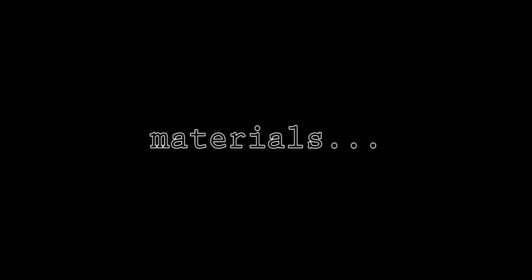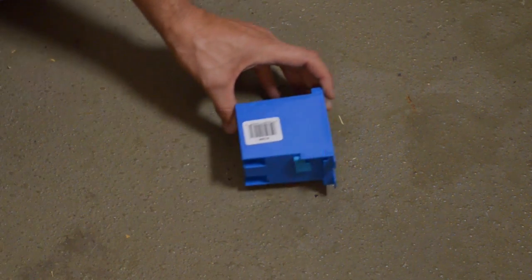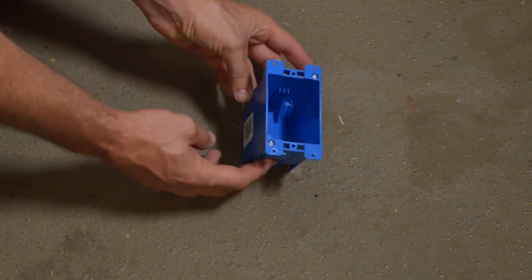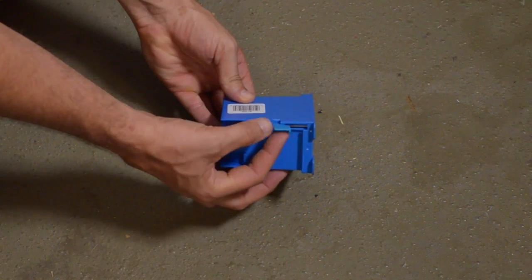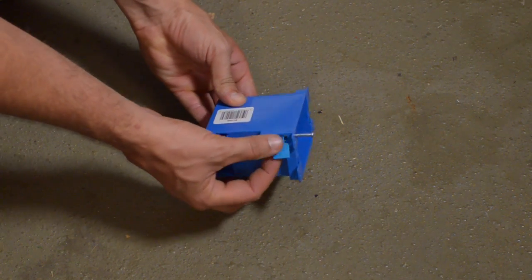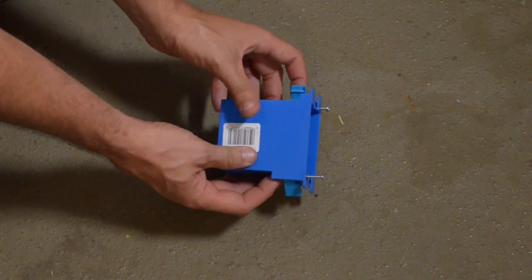So first things first, we need some materials. We need an outlet box, an old work outlet box that has these little fins on it like this that allows it to snug up to the drywall.